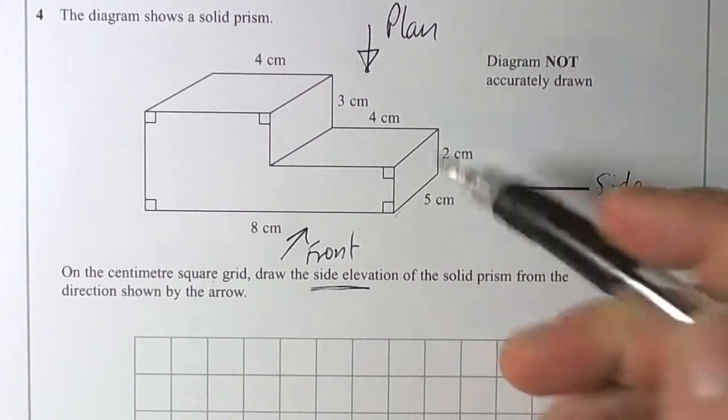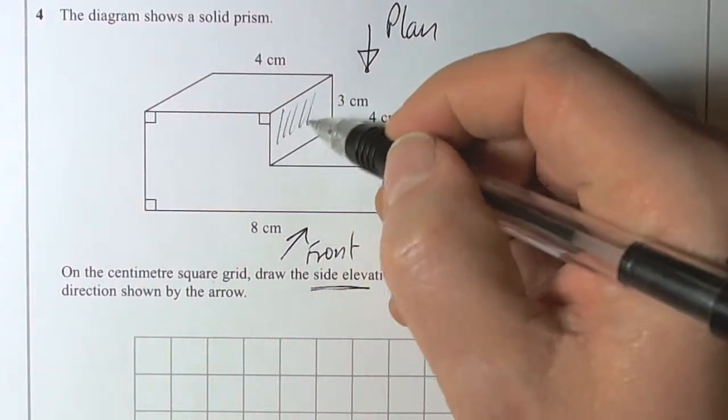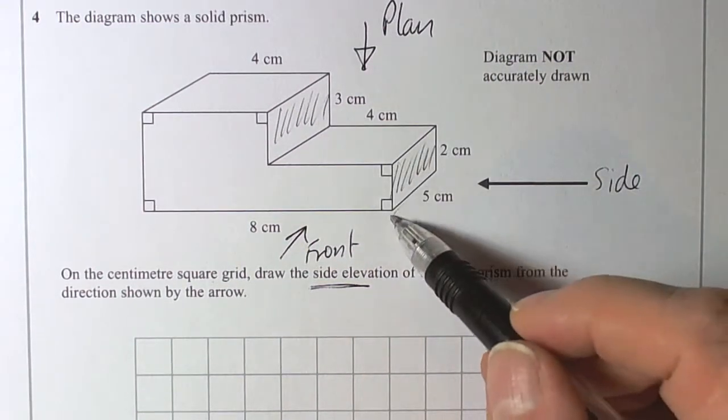We can see that if we look from the side here, then we're going to see that face there and we're going to see that face there. So basically, we're going to see two rectangles that have got a width of five, one of them's got a height of two, and the other one's got a height of three.